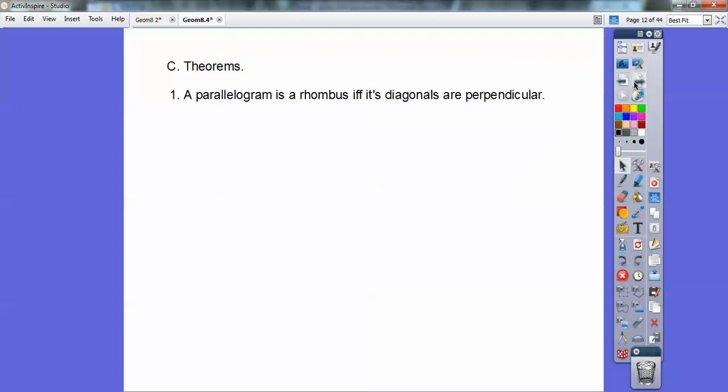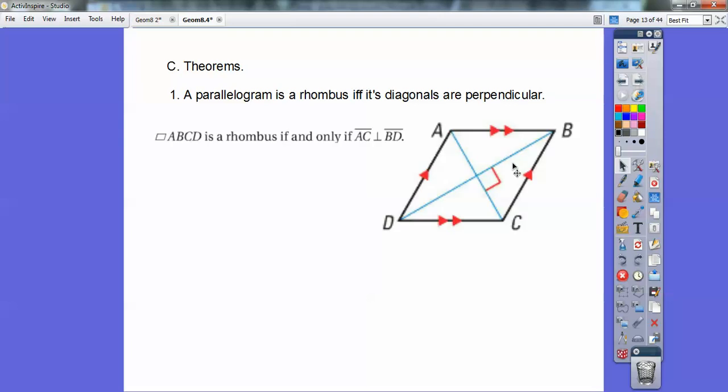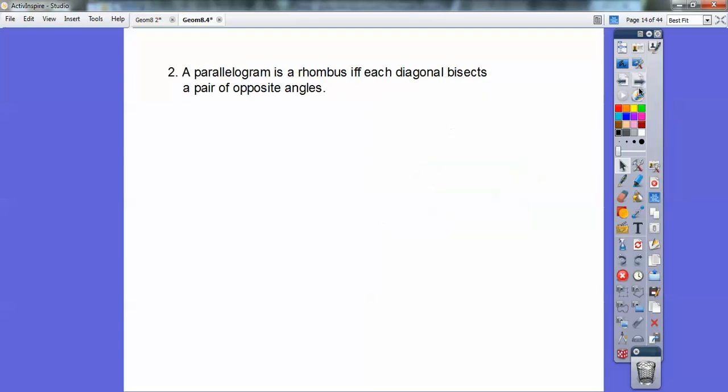Okay, so here's some theorems about this. A parallelogram is a rhombus, remember IFF means if and only if, if and only if its diagonals are perpendicular. So it's a rhombus when the diagonals are perpendicular. Okay, so these four sides are congruent if these diagonals make a right angle right there. Alright, so it's rhombus if the diagonals make a right angle.